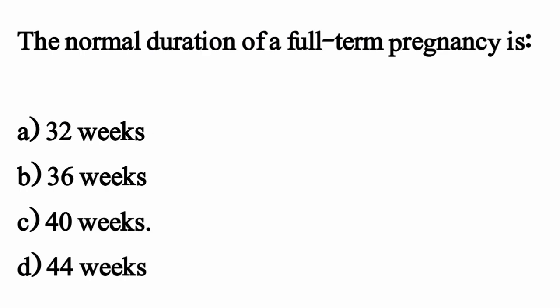The normal duration of a full term pregnancy is — the correct option is Option C: 40 weeks.